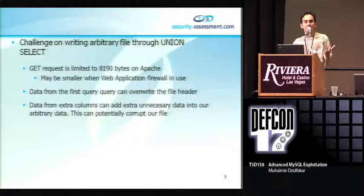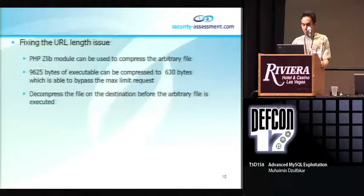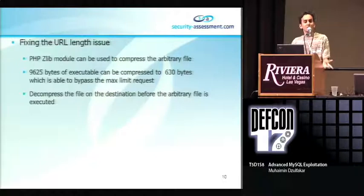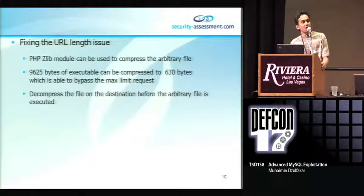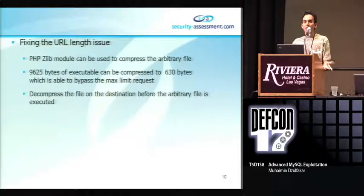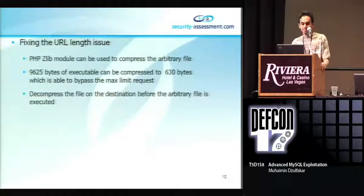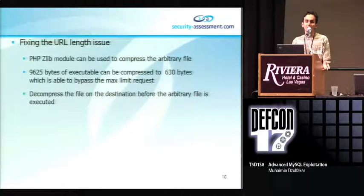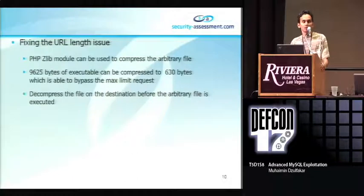To fix the URL length issue, we can simply use the Zlib module to compress our arbitrary file. In my experiment, from 9,625 bytes, I was able to compress the file down to only 630 bytes. This allows us to bypass the maximum limit allowed on Apache. The file can then be decompressed back on the destination before it is executed.